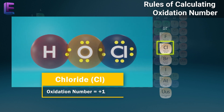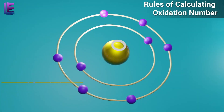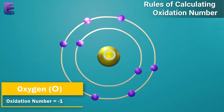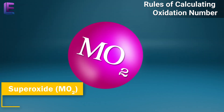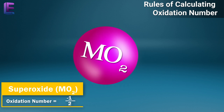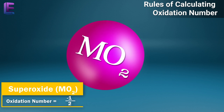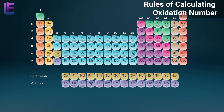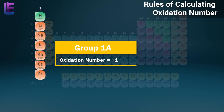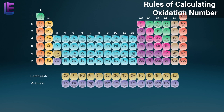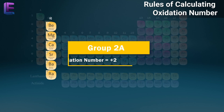In many compounds, oxygen has an oxidation number of minus two. While in superoxides, it is minus one-half. Group 1A elements usually have an oxidation number of plus one, while that of group 2A elements is plus two.